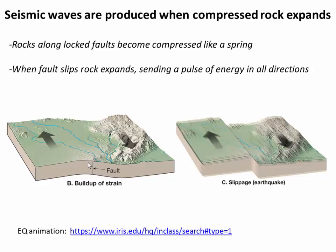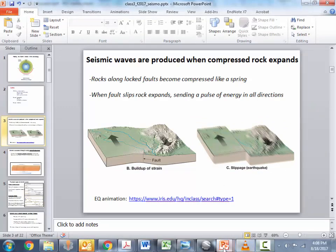In this case, the initial energy, or the stone, comes from an earthquake. What happens during earthquakes is that because fault zones are locked but the plates keep moving, rocks right along the fault actually get compressed, much like a spring might get compressed. Then, when the fault breaks and slips, that stored energy is released as the rock expands back to its original shape and the spring rebounds. At that moment, a wave of compressional energy is essentially radiated in all directions from the fault.